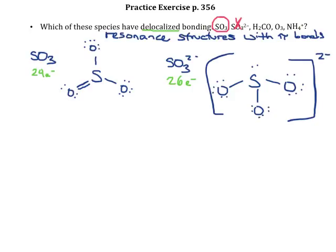Okay, let's do the next one, H₂CO. Again, counting up the valence electrons, I've got one from each of the hydrogens, four from the carbon, six from the oxygen. That gives me a total of 12 electrons to work with.